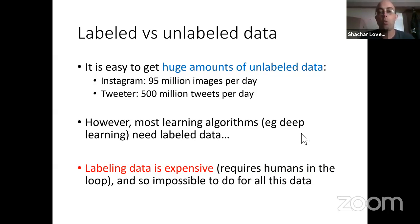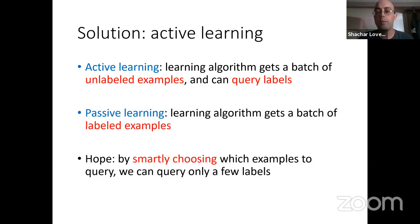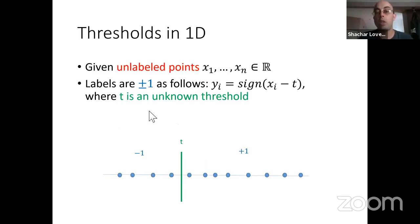Active learning says: your learning algorithm gets a lot of unlabeled examples and has a query oracle. We want to ask the labels of a few examples and somehow infer the labels of many more for free. The question is when can we do it and when can we analyze this? Let me show you a toy example illustrating that in some cases, this is actually useful.